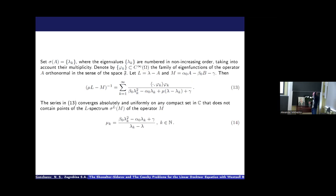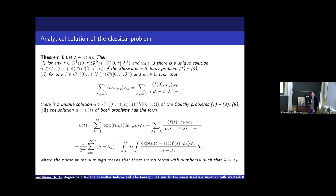These operators A and B are self-adjoint since we have U and F as separable Hilbert spaces with respective inner products. We set the set of eigenvalues and denote the set of eigenfunctions of operator A orthonormal in the sense of space F. We introduce operators L and M, where L is a linear operator and M is a closable, densely defined operator. We have the L-spectrum of operator M, which has the following form, and this series converges absolutely and uniformly on any compact set that doesn't contain the points of the L-spectrum of operator M.